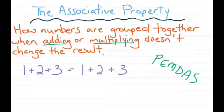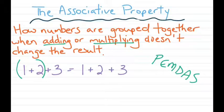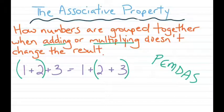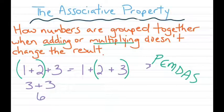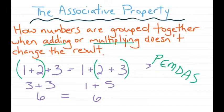Let's say I have 1 plus 2 plus 3 on both sides. That's the same thing written twice, so it's not showing the associative property yet. Let me throw in some parentheses. On the first side, I'll group 1 and 2 together; on the second side, I'll group 2 and 3 together. Using PEMDAS, we do parentheses first: 1 plus 2 is 3, then 3 plus 3 equals 6. Over here, 2 plus 3 is 5, then 1 plus 5 is 6. So I had the numbers grouped differently but still got the same end result of 6. That's the associative property with addition.